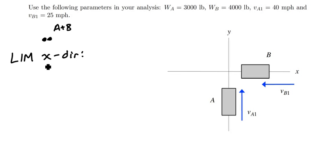Applying this in the x direction, the initial momentum in x will be minus the mass of B, so the weight of B divided by g, times VB1. This equals post-impact the total mass of the system, which is the weight of A plus the weight of B divided by g, times what I'll call V2 in the x direction.